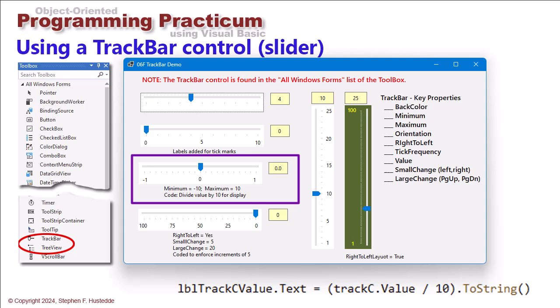But programmatically we could divide the value of the track bar by 10 and convert that to a string and show that in our label. So here while it says I'm at minus one on the left hand side, it really is a minus 10 value on the track bar, and same with positive one, it's really a positive 10 on the track bar.